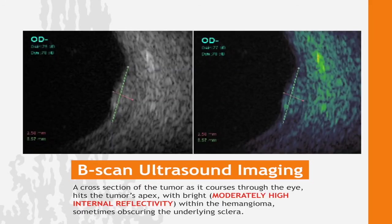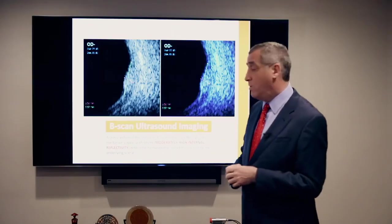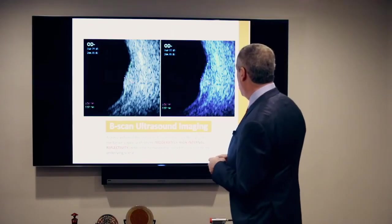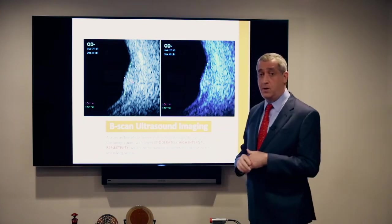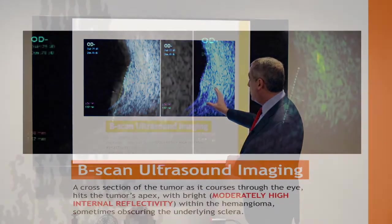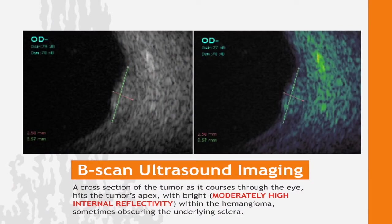On B-scan of the hemangioma, if you don't have an A-scan you can just look at the tumor and see that it's bright compared to the choroid or the vitreous. Comparing hemangiomas to melanomas, melanomas tend to be more moderate or low-reflective. If you have color in your ultrasound machine, you can colorize the photo — that accentuates the differences and the high internal reflectivity.